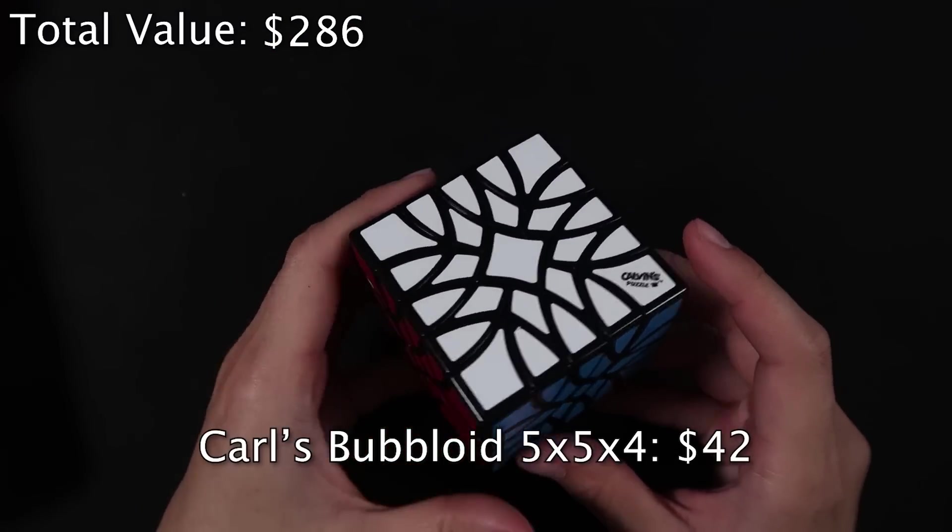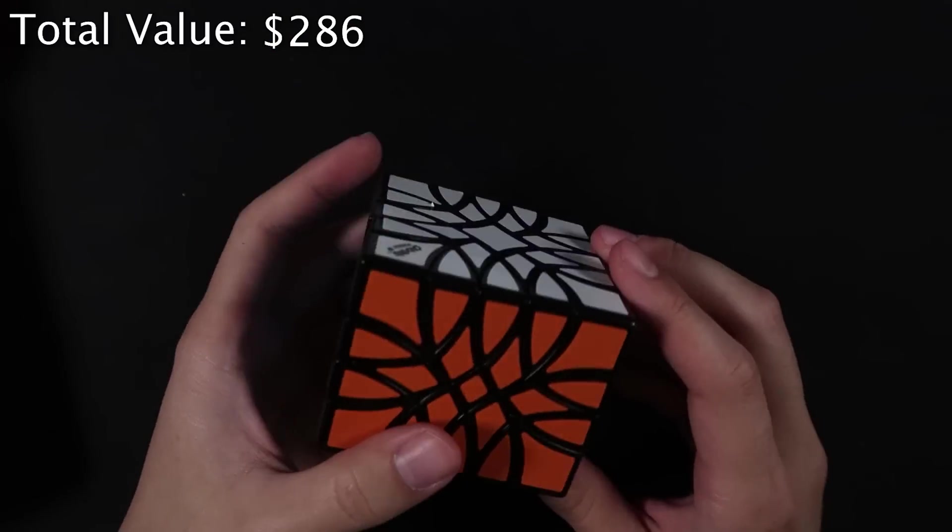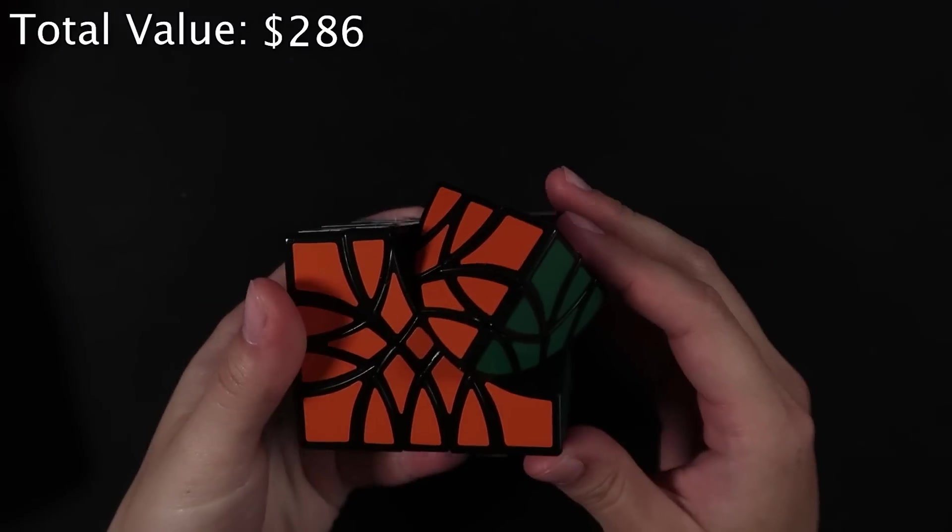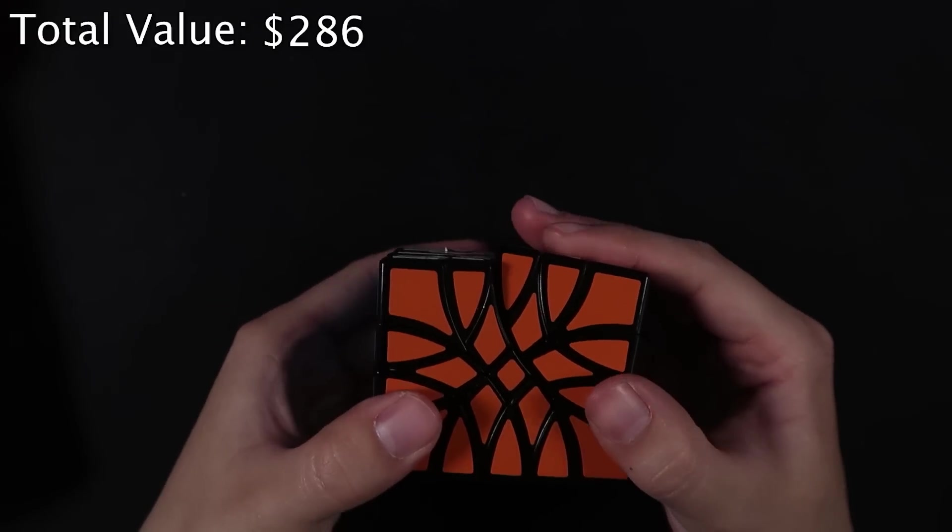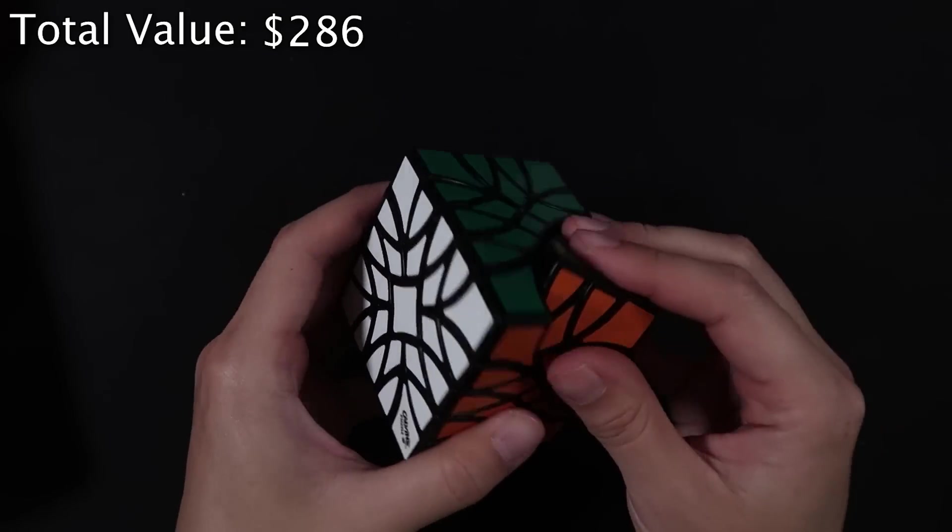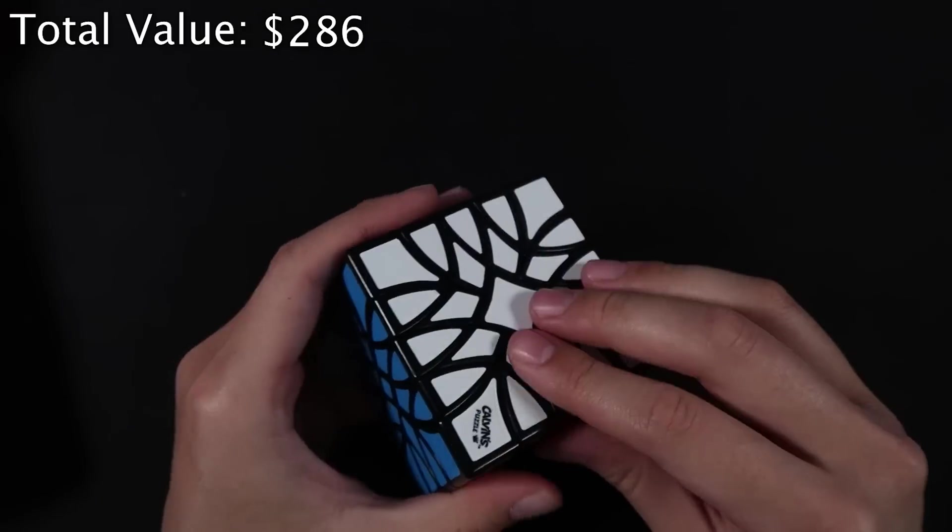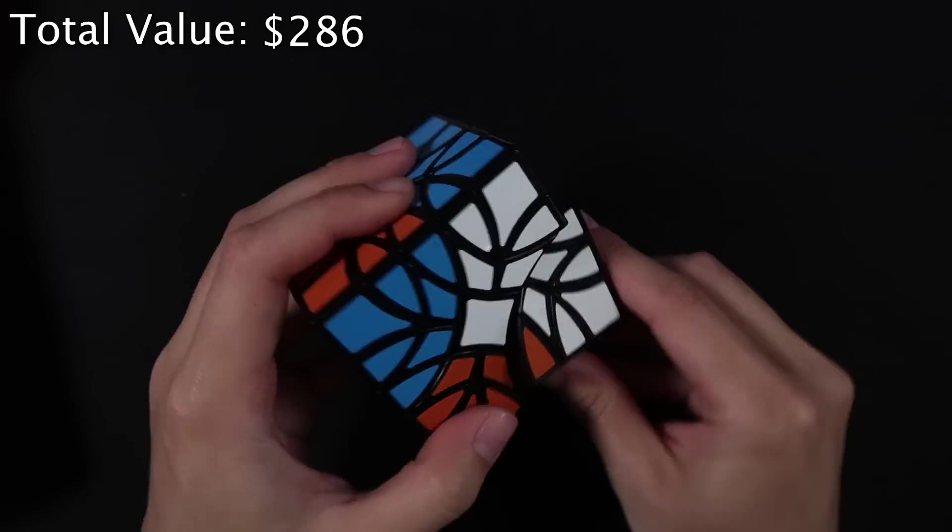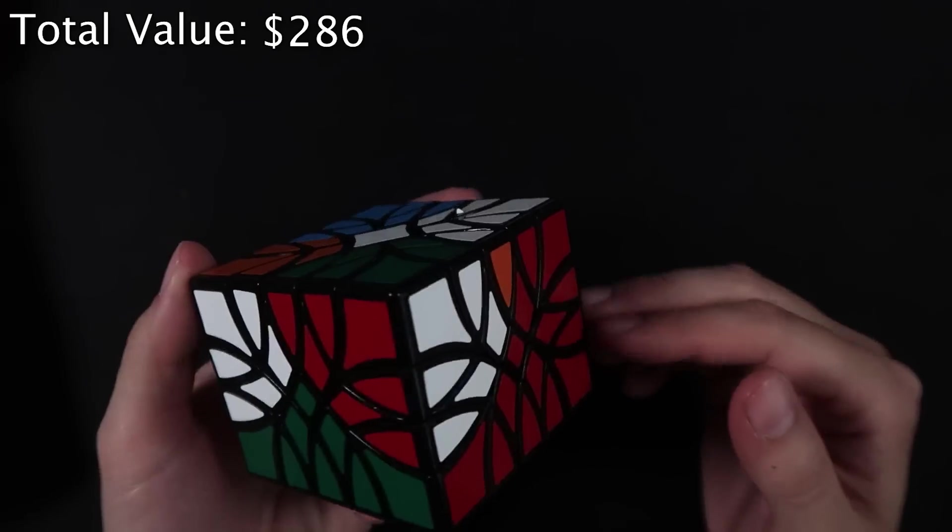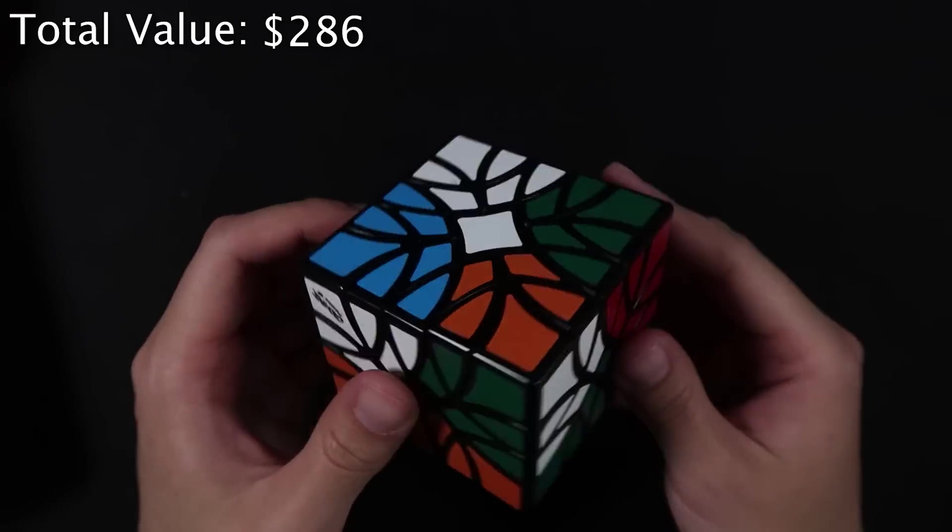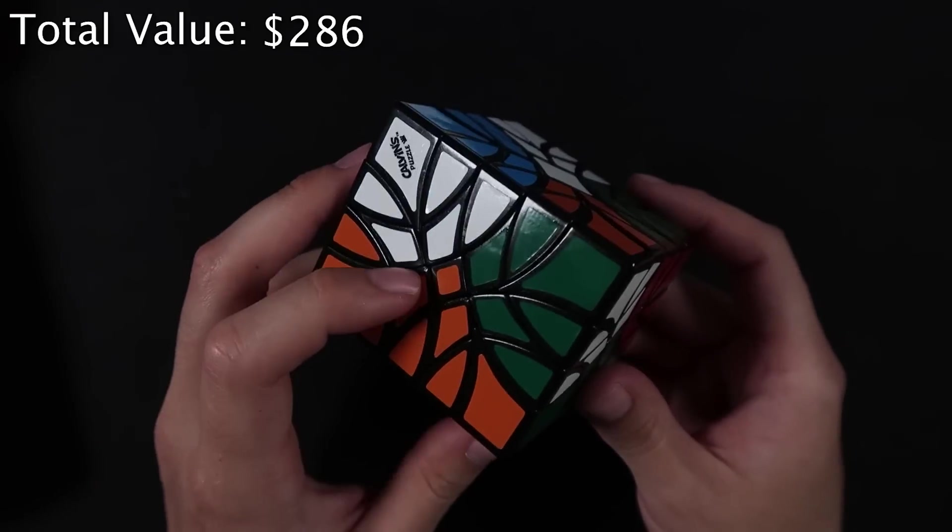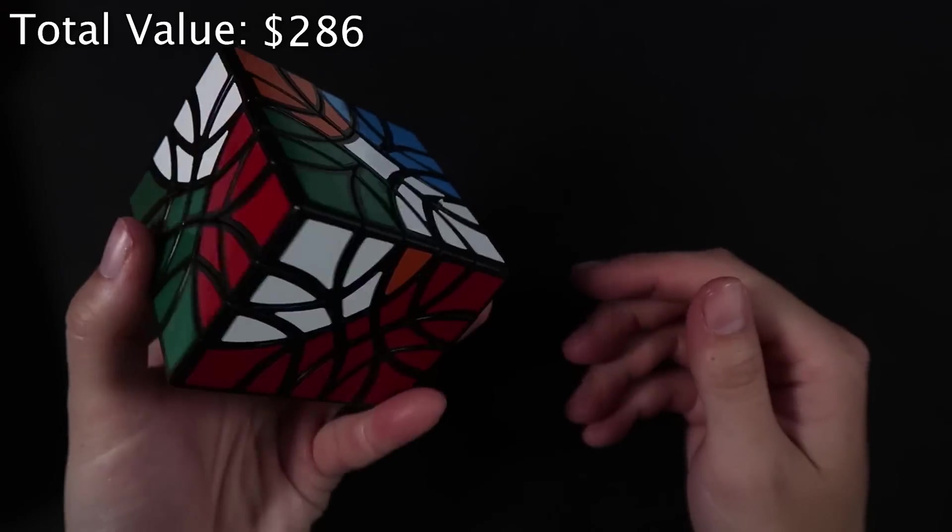We also got a Carl's Bubloid 5x5x4. This is a very interesting puzzle. I don't know that I fully understand how this even turns. I feel like there's probably some weird ways that this cube can turn, but for now, obviously can twist the corners. I feel like this should maybe be able to jumble. Someone can tell me in the comments below. But this is a very beautiful puzzle, and it's also just really high quality. This is one of my favorite ones.